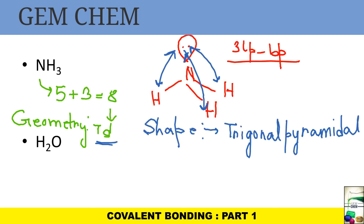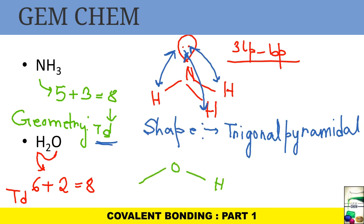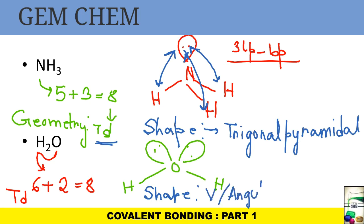For the water molecule, the central atom is oxygen. Oxygen has six electrons plus two from the two hydrogens, giving eight — so the geometry is tetrahedral. However, two positions are occupied by lone pairs and only two by hydrogens, so the observed shape is bent, V-shaped, or angular.